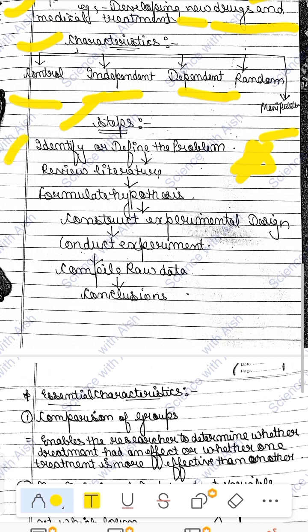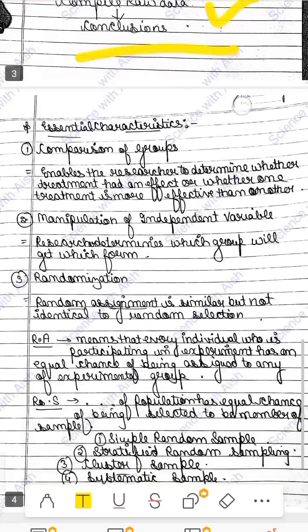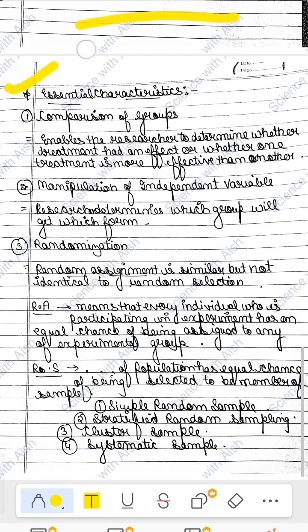First, identify the problem. Second, review the literature. Third, formulate the hypothesis. Fourth, construct the experimental design. Fifth, conduct the experiment. Sixth, collect raw data. Then draw conclusions from the evidence and results.